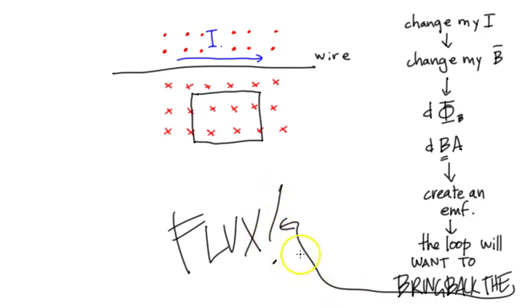So if I have no current, I got no magnetic field. And as I increase my current, I will increase the strength of my magnetic field. So, but if I change it, that is a change in the magnetic flux. And if I change the magnetic flux in a loop, therefore, I'm changing dBA, and it's the B I'm kind of interested in here. Then I'm going to create an EMF. In other words, the loop, what will the loop do? Will want to do what? Tell me what it is. Yes, bring back the flux. Bring back the flux. It wants to bring back the flux.